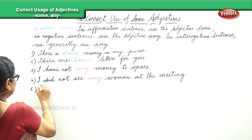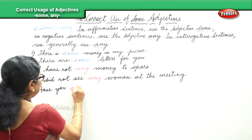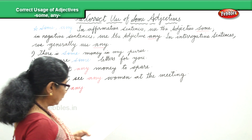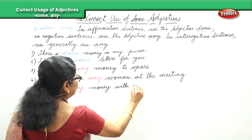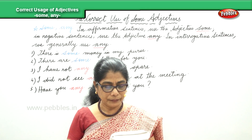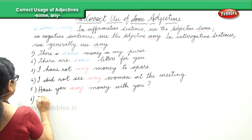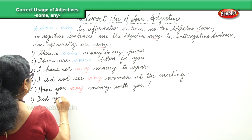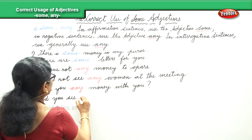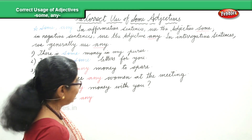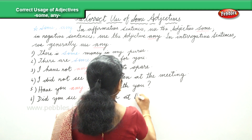Now the interrogative examples. 'Have you any money with you?' And: 'Did you see any women at the meeting?'